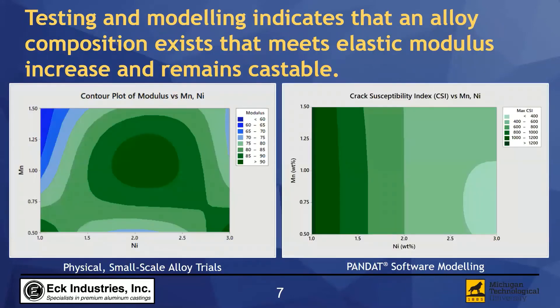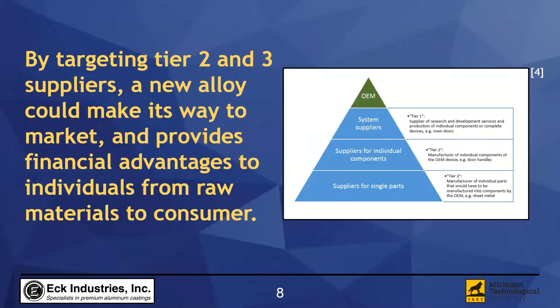Exactly right Joel, and these contour plots from testing and modeling are a great tool to find that balance. On the left side of the screen is a plot showing how modulus is affected by manganese and nickel, generated from physical small-scale alloy trials. The plot on the right was generated through PANDAT simulation software to show crack susceptibility. The highlighted region defines an area of high modulus and low crack likelihood, showing that a stiff and castable alloy is possible. On the right is a general supplier to OEM sourcing structure for most manufacturing industries. If implementing this new alloy can let suppliers be more competitive by offering a better product, let manufacturers gain better fuel economy, and ultimately let consumer prices decrease, the opportunity for savings is very large. We believe that this alloy development is a good fit for use in several industries and could offer fairly immediate returns on investment.